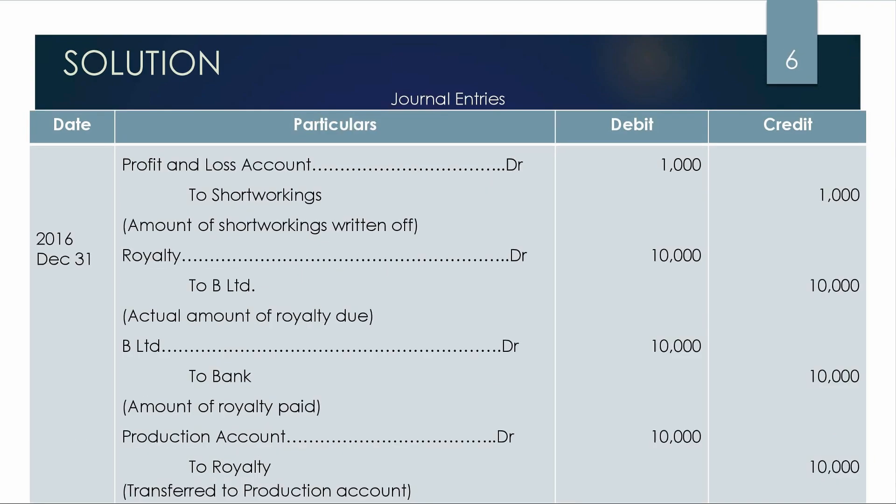In the next year, we have Rs.10,000 minimum rent. We collect Rs.1,000 short working. Then we transfer the short working to the Profit and Loss account.